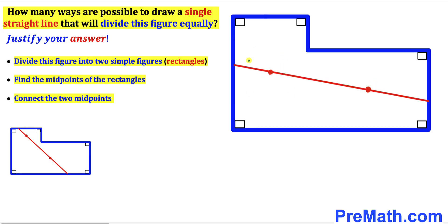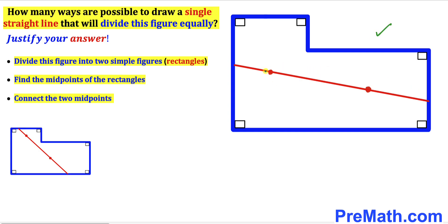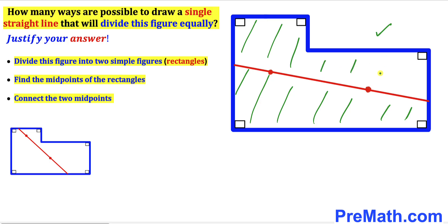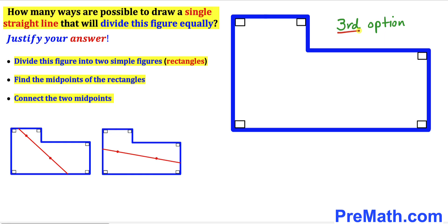Now we connect these two midpoints and we get a single straight line. This line divides the figure into two equal parts — this part is equal to the other part. So this is our second option.